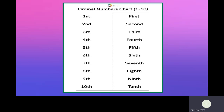Let us now look at the list of ordinal numbers from one to ten. This is how we denote first, second, third, fourth, fifth, sixth, seventh, eighth, ninth, and tenth. You have to learn these spellings and also know how to denote these numbers from one to ten.